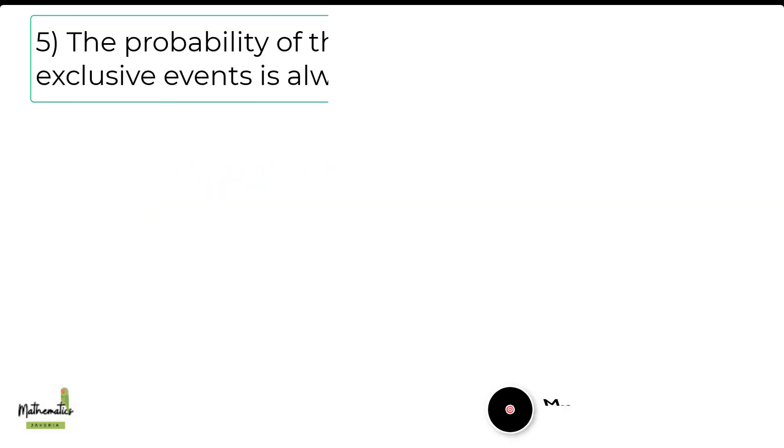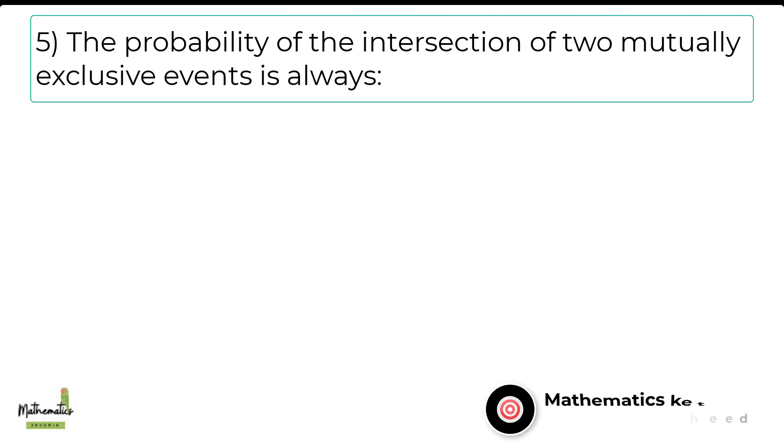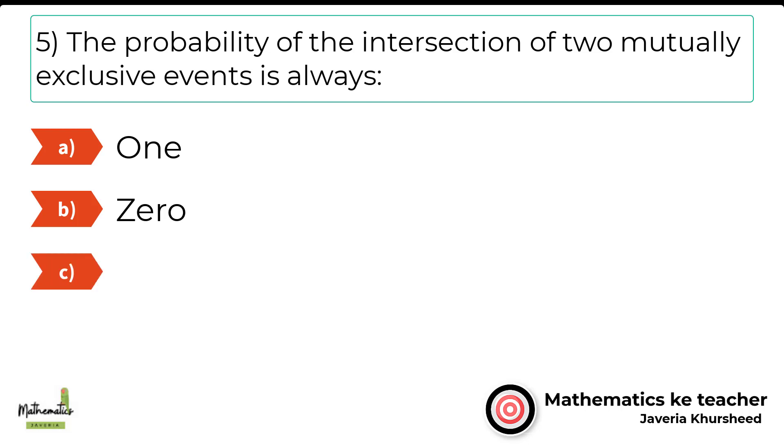Number 5. The probability of the intersection of two mutually exclusive events is always: A. One. B. Zero. C. Finite. D. Infinite.